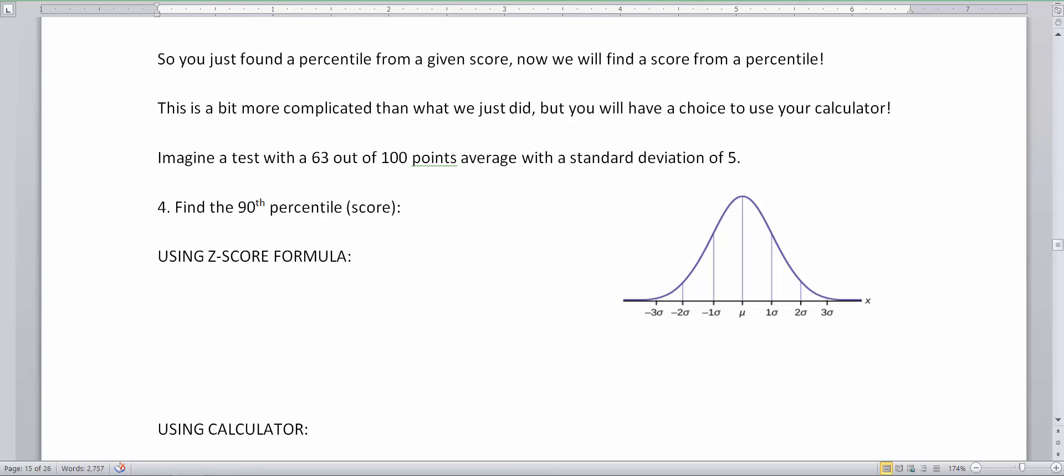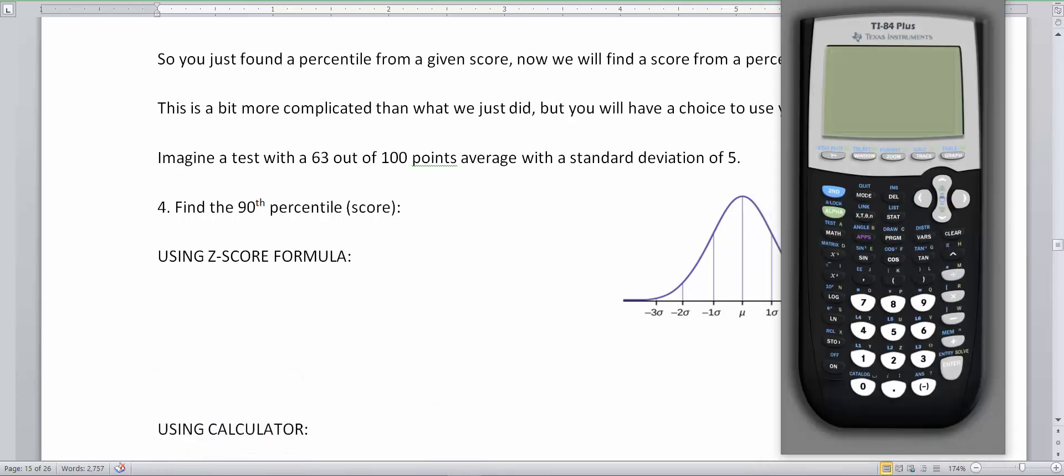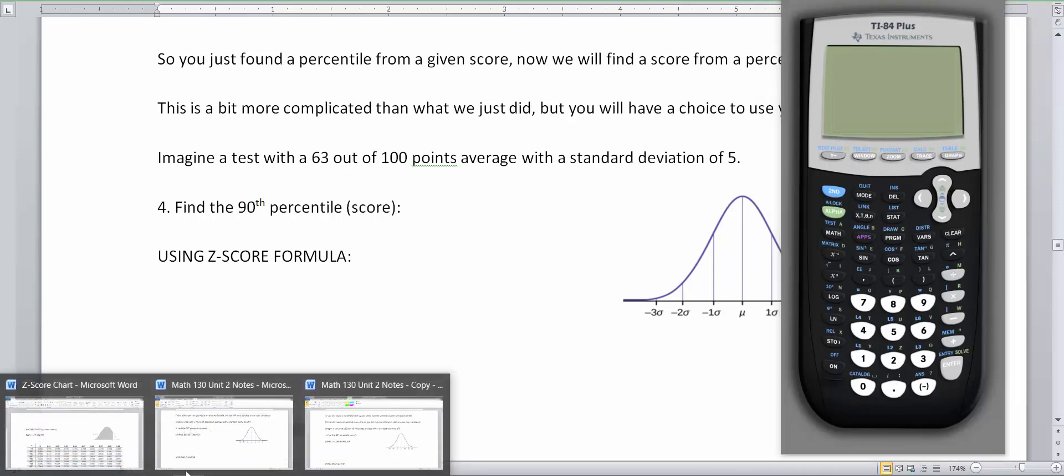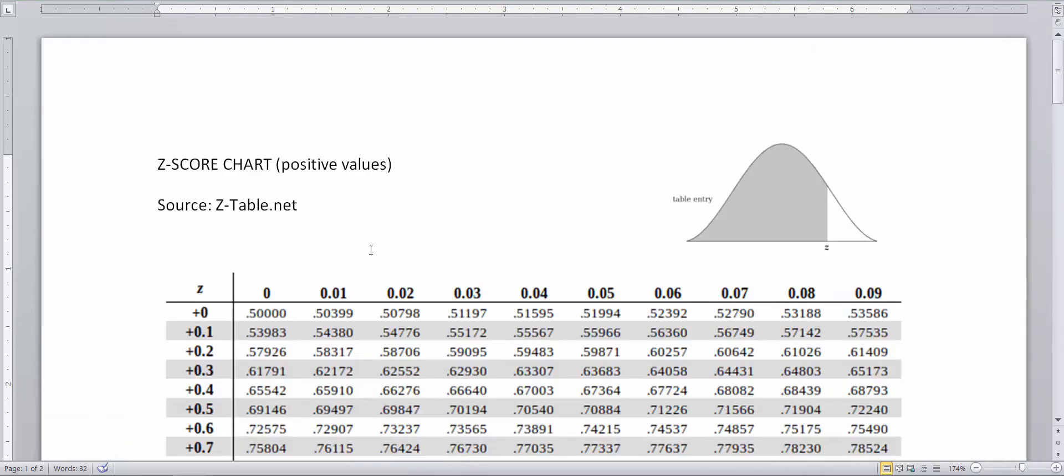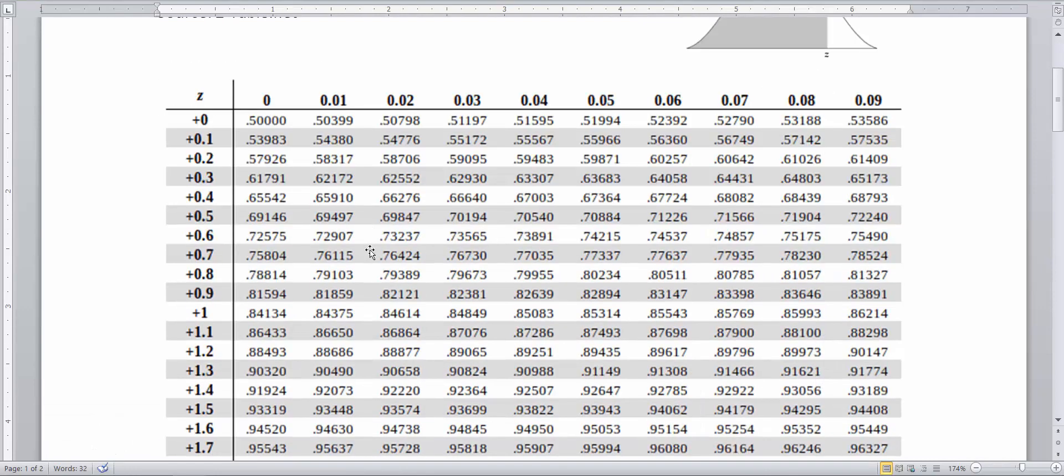Alright so let's buckle in because this can get a little confusing. And what you need in front of you is your calculator. So if you have your calculator make sure you have that nearby. And also please make sure you have your z-score chart. And we're going to be in the positive page for this example.